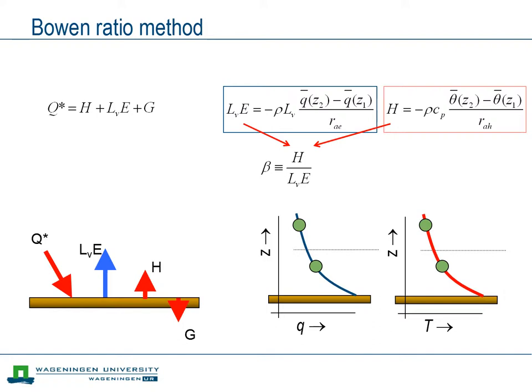To that end we first take the ratio of the sensible heat flux and the latent heat flux. The dimensionless ratio that results we will call the Bowen ratio. Now we substitute the resistance expressions for the fluxes, the sensible heat flux to the left and the latent heat flux to the right.